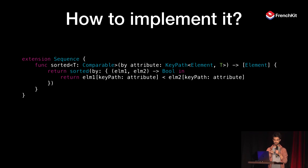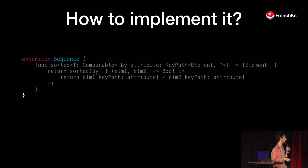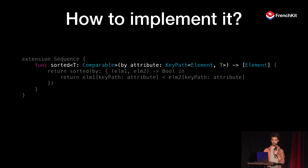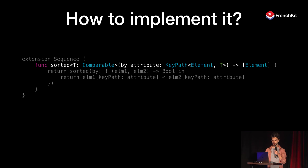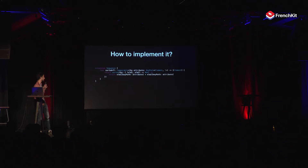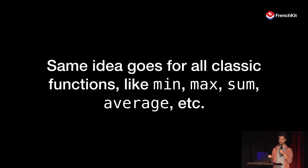It's actually quite simple. I'm going to walk you through the code. First, we define an extension on Sequence, because that's where all the data manipulation functions live. Then we define a function called sorted that takes a key path as its argument. The key path is called on the element of the sequence and needs to return a Comparable property, because we're doing comparison-based sorting. Inside, we call the standard library's sorted function with a closure, where we use the key path to get the actual value of the property on our arguments, compare them, and voilà. We can now sort with a much shorter and cleaner syntax. The same ideas apply for all classic functions like min, max, sum, average, map, etc.